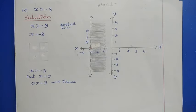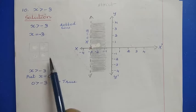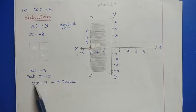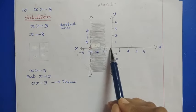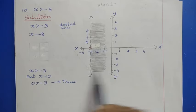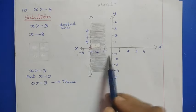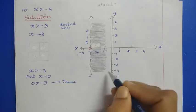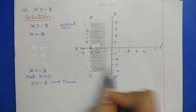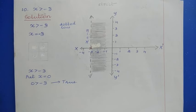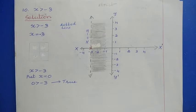To find the shaded area, substitute x = 0 into x > -3: we get 0 > -3, which is true. Since the origin gives a true result, shade the area towards the origin — to the right of the dotted line. This completes exercise 6.2 questions 7 through 10.